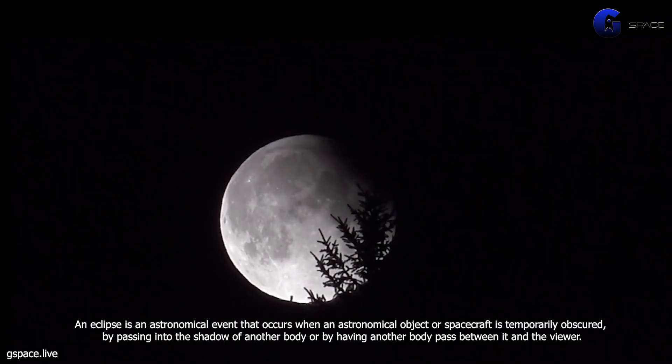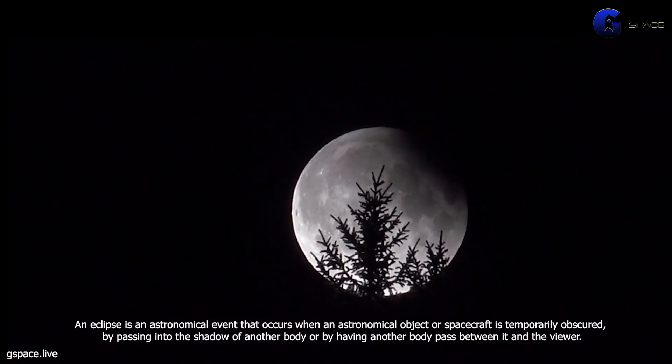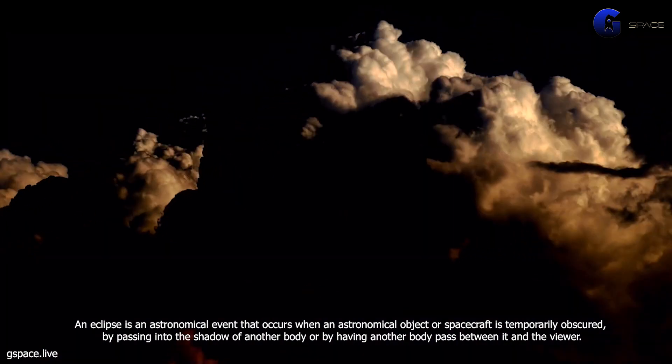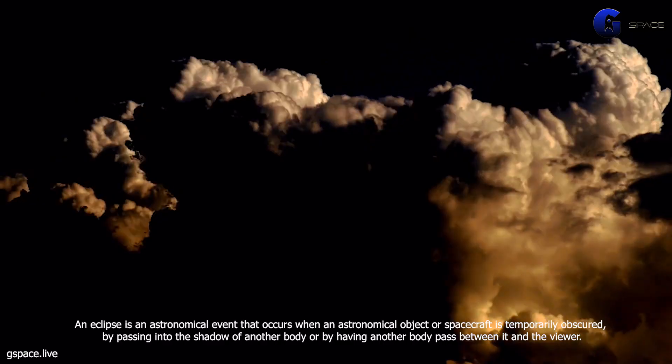Eclipse. An eclipse is an astronomical event that occurs when an astronomical object or spacecraft is temporarily obscured by passing into the shadow of another body or by having another body pass between it and the viewer.